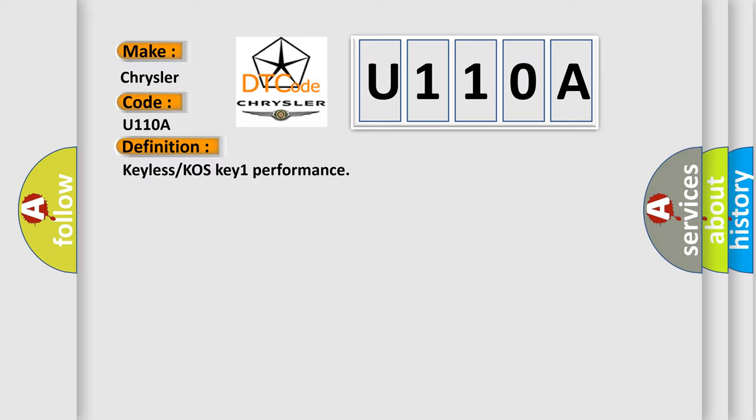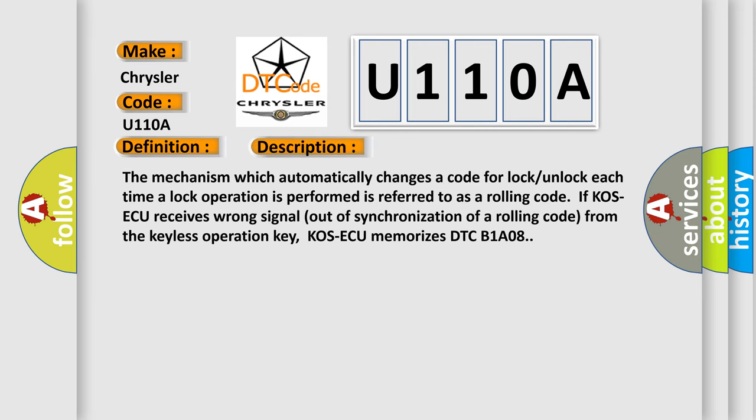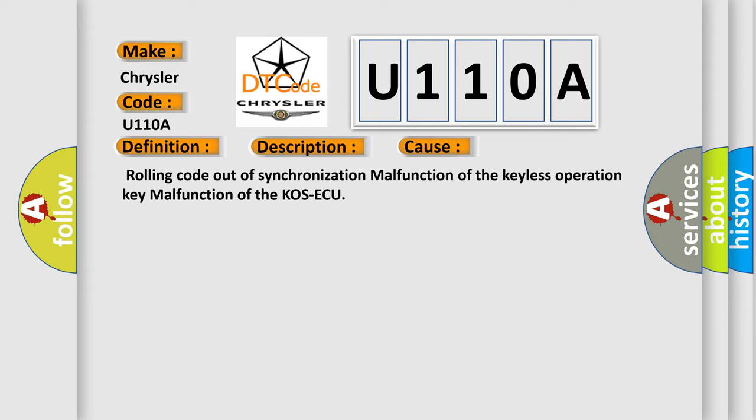The basic definition is: Keyless or COS key 1 performance. The mechanism which automatically changes a code for lock/unlock each time a lock operation is performed is referred to as a rolling code. If COS AQ receives a wrong signal out of synchronization of a rolling code from the keyless operation key, COS AQ memorizes DTC V1A08. This diagnostic error occurs most often in these cases: rolling code out of synchronization, malfunction of the keyless operation key, or malfunction of the COS AQ.